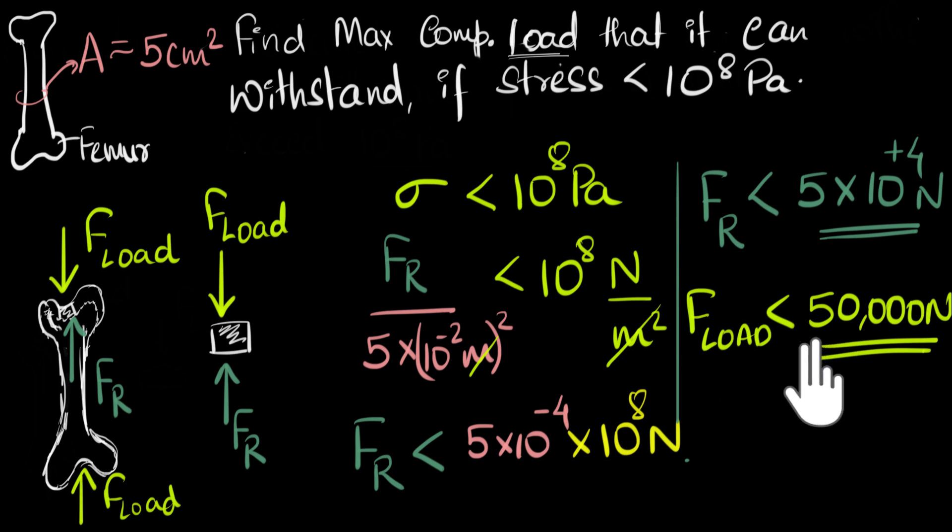Now, I just want you to think about the numbers over here. 50,000 Newtons is roughly 5,000 kilograms. Does that make sense? Because if you think in terms of weight, 50,000 equals MG, and so M has to be 5,000 for that. So your bone can withstand 5,000 kilograms of weight. And even if we could say, well, we'll not go to 5,000 because 5,000 is like the limit.